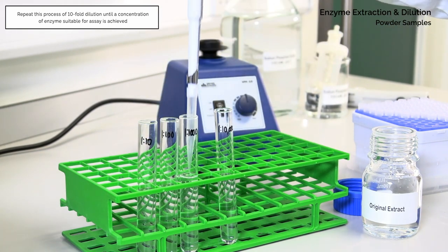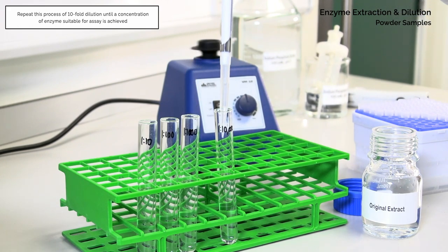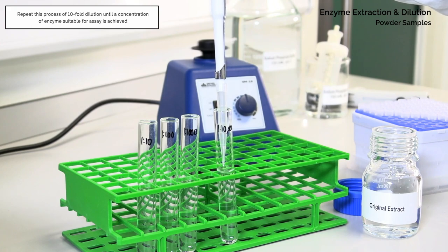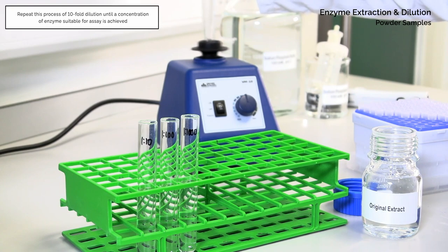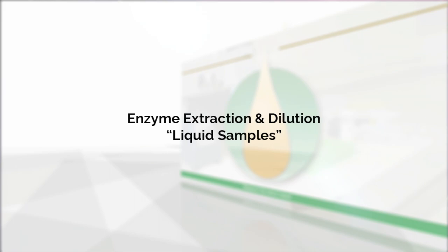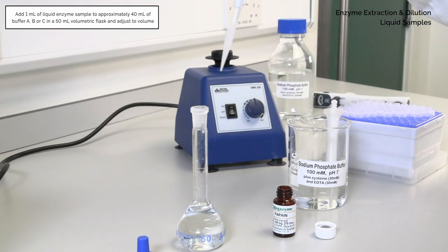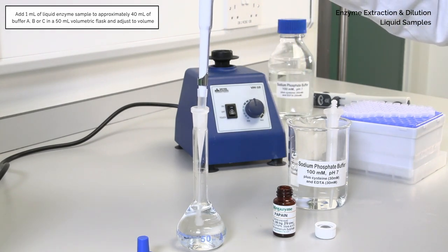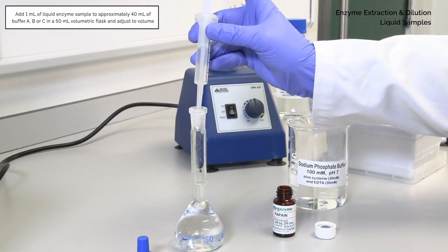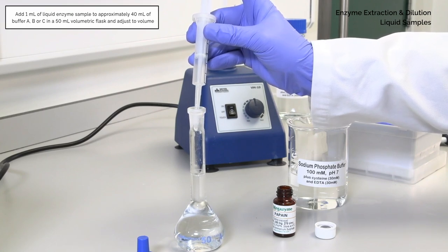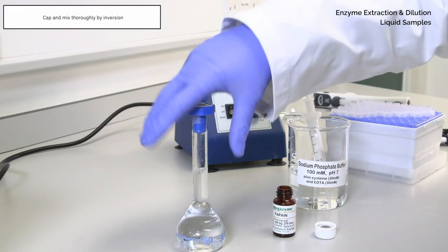In a positive displacement dispenser, add 1 ml of liquid enzyme sample to approximately 40 ml of buffer A, B, or C in a 50 ml volumetric flask and adjust to volume. Mix thoroughly by inversion.